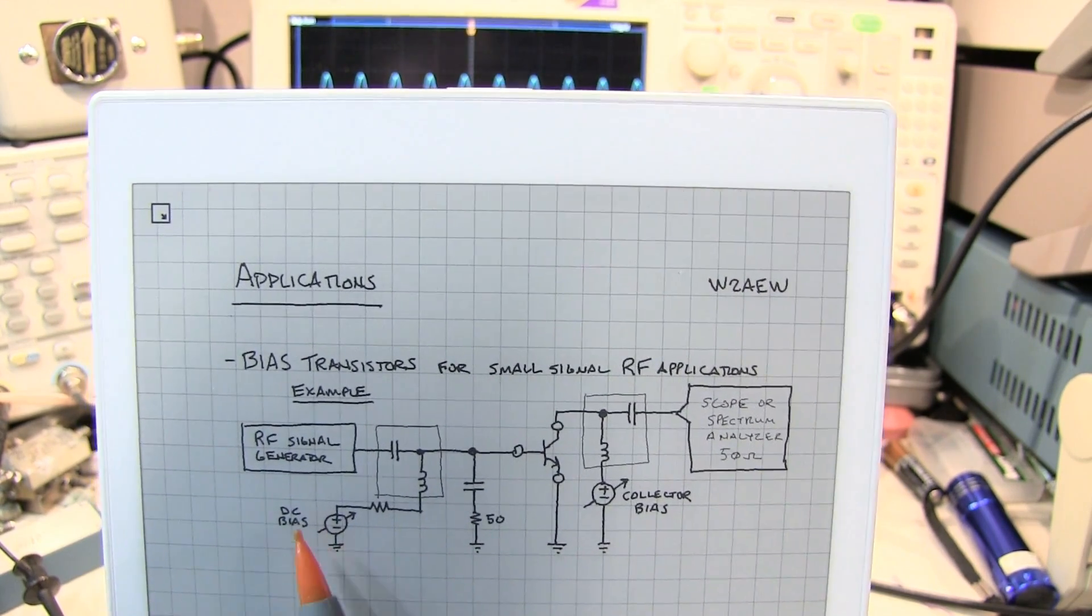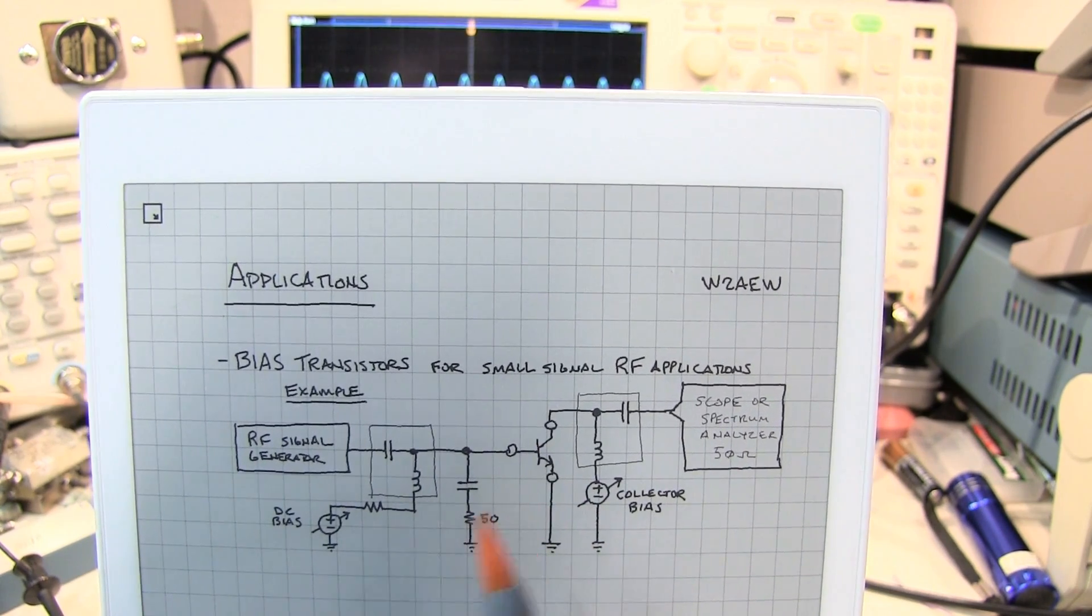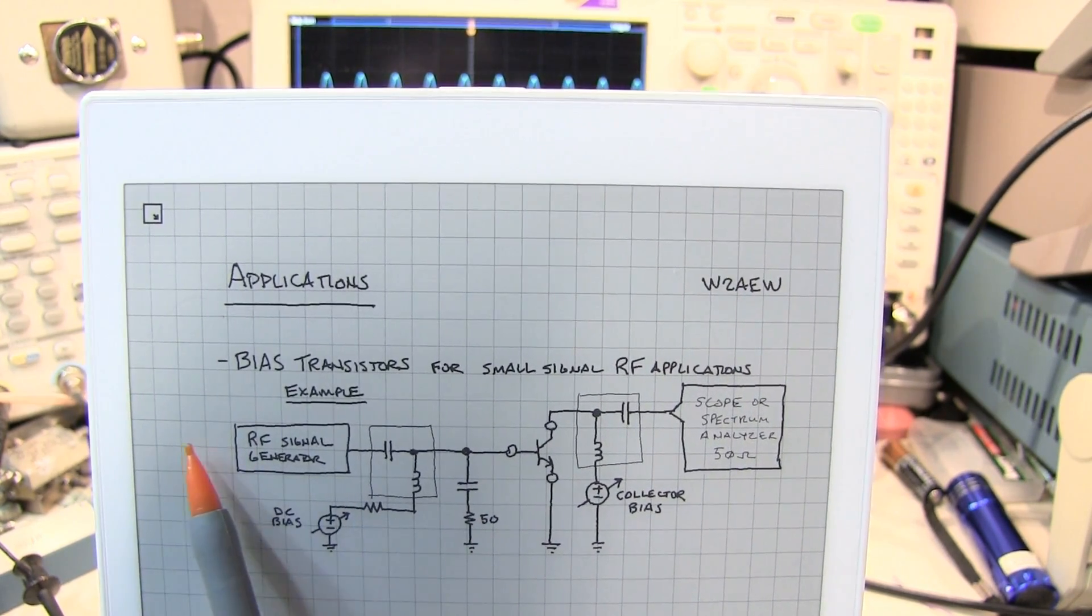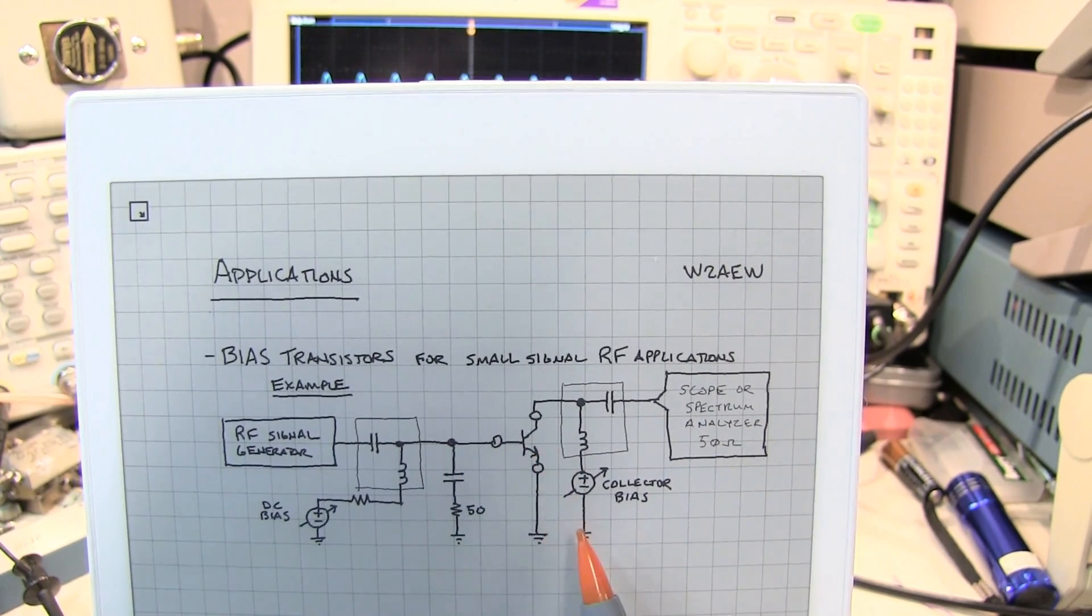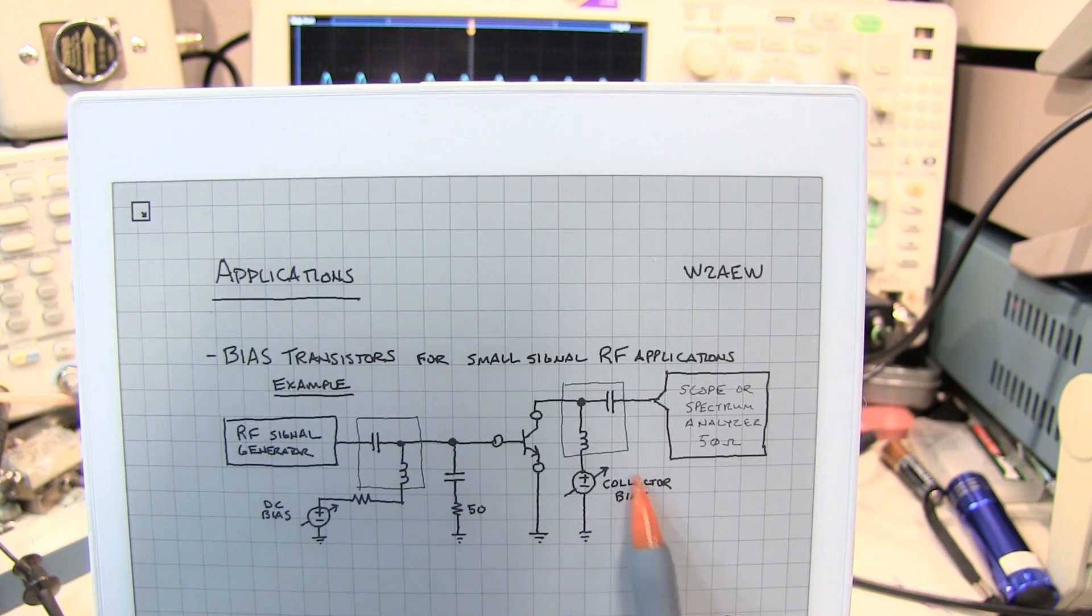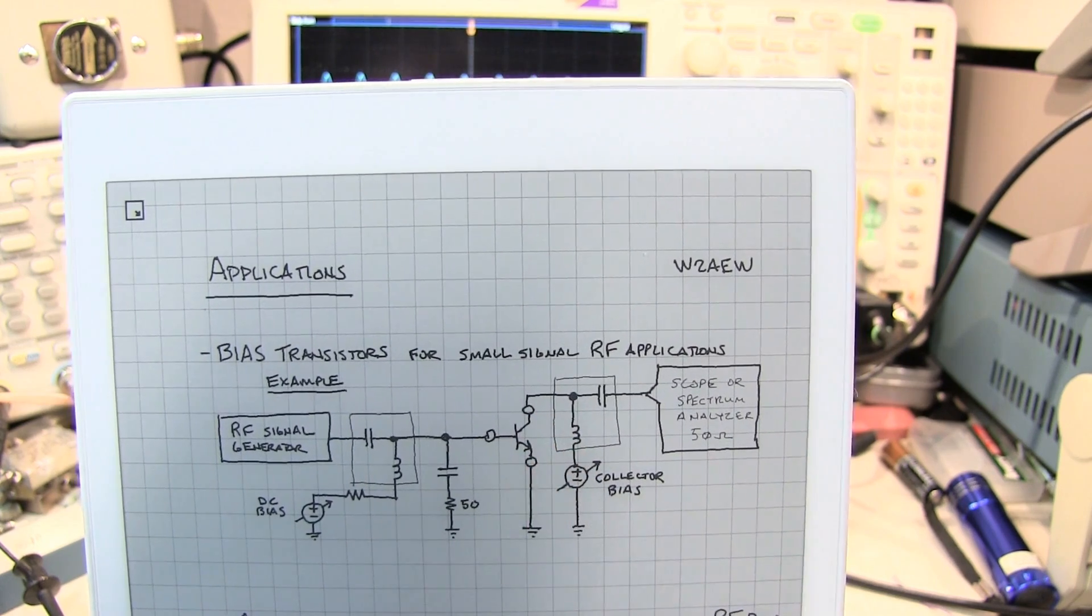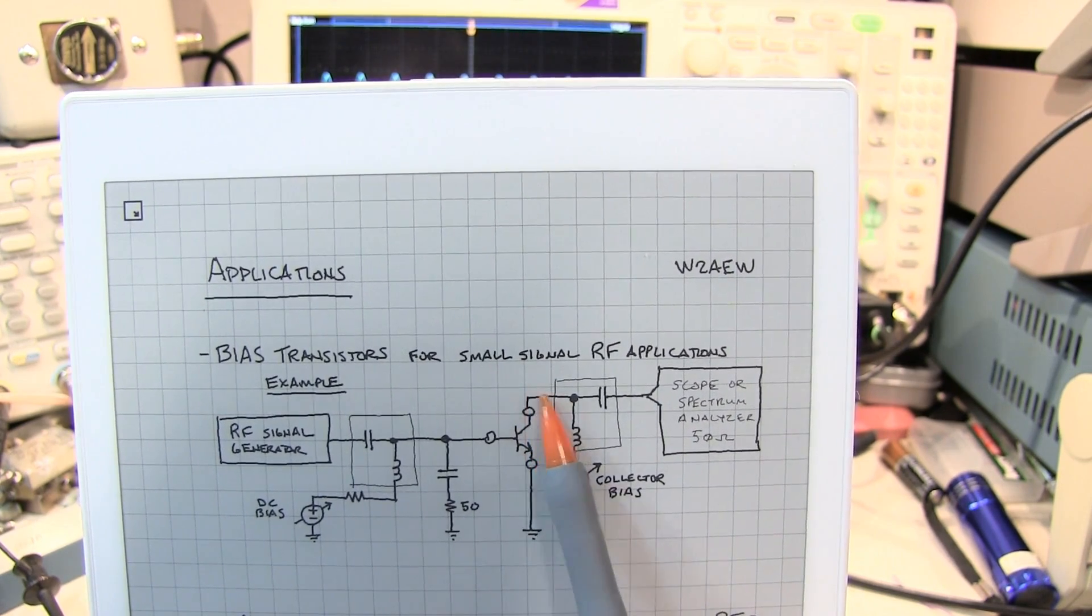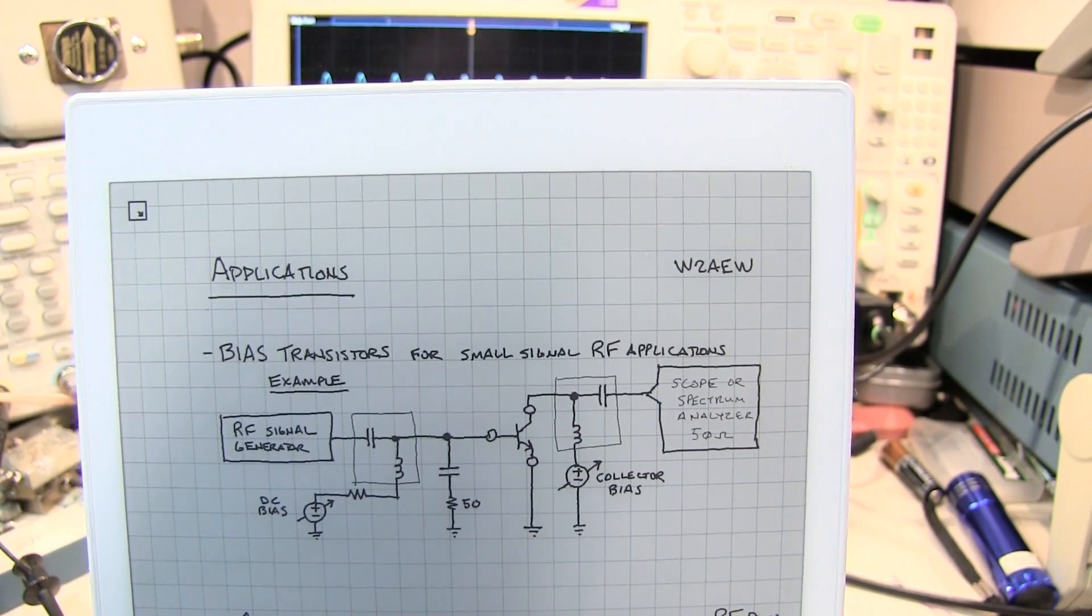Now here's an interesting application where we're using two bias tees to look at the RF performance of a bipolar junction transistor. I'm using one bias tee to turn on and bias the transistor to a desired level and bring in an RF signal and terminating here on the test fixture, and then taking the output through another bias tee using the voltage source to set the collector-emitter voltage to a desired level, and then coupling the RF signal into, in this case, I'm using an oscilloscope to make the measurement.